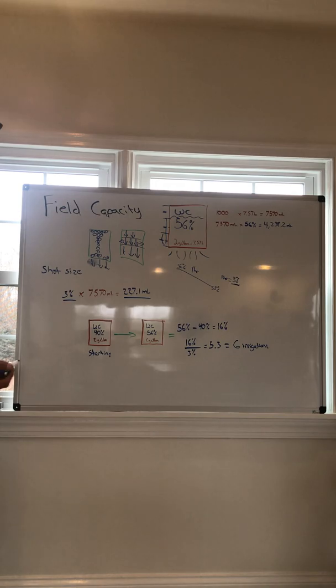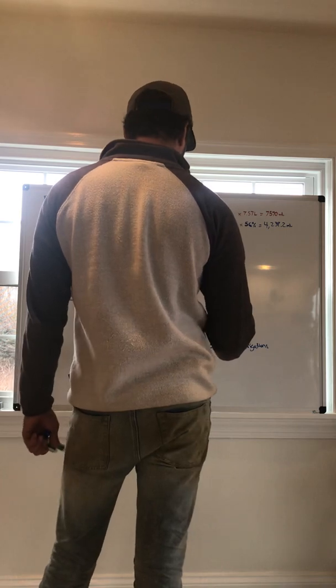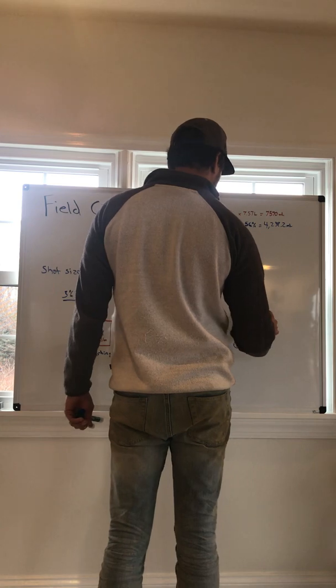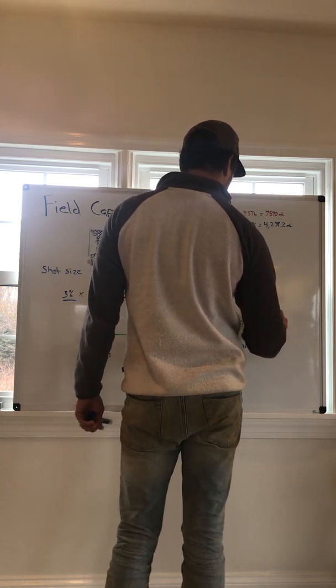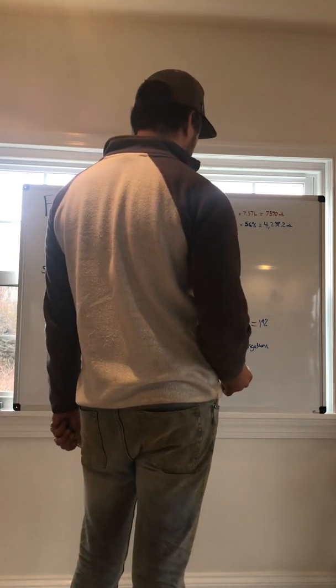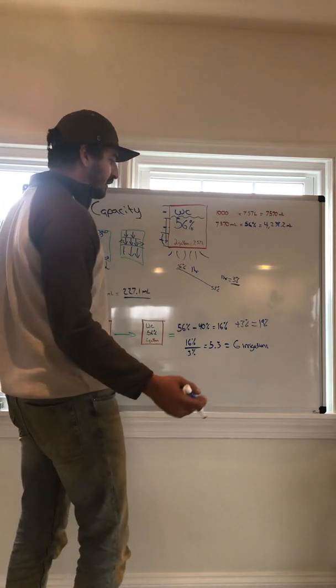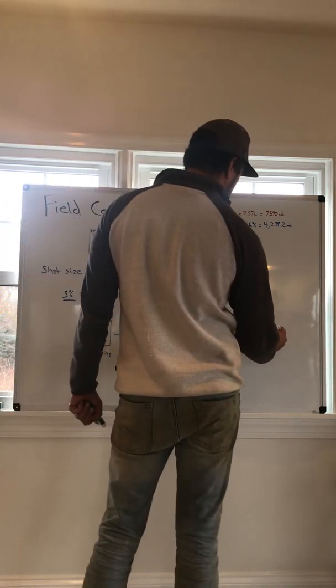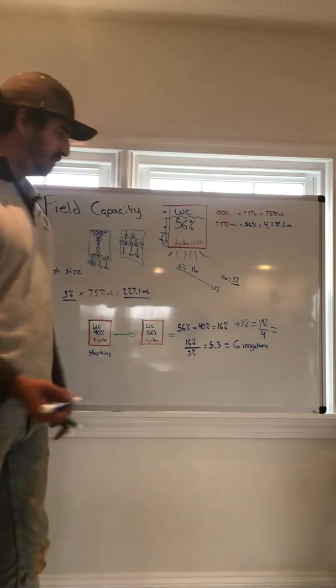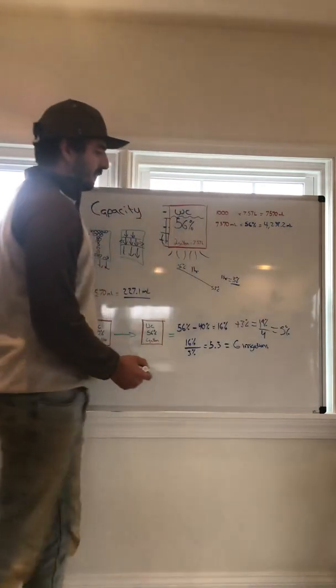And in that case of it, it would end up being 16% plus three equals 19. And then 19, divide it by four because we want to get four irrigation events to resaturate. So that's once every 15 minutes. So divide this by four, and then you're going to end up with basically five percent shot size.